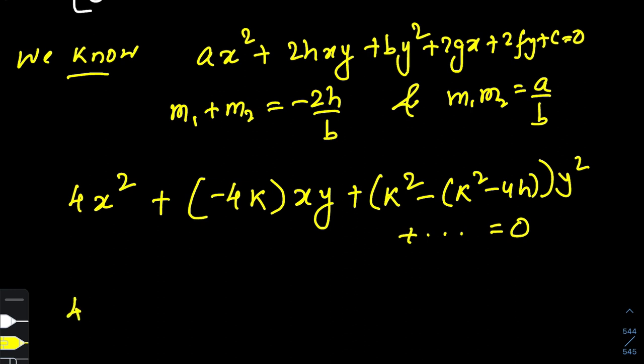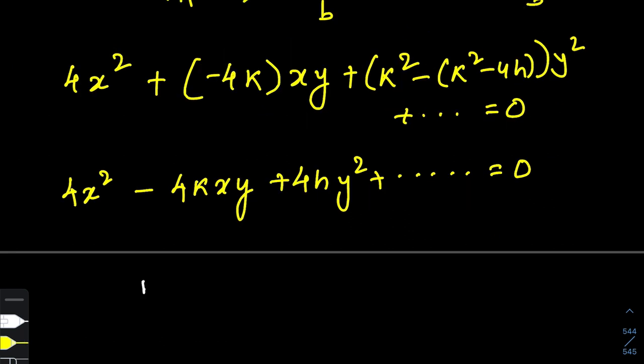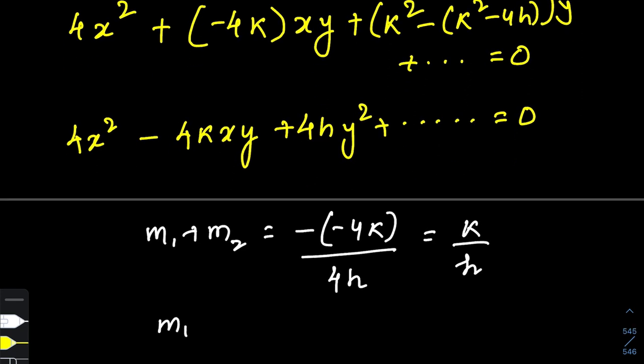So we end up getting the equation of the pair of tangents as 4x² - 4kxy + 4hy² plus some insignificant terms. From here, m₁ + m₂ would be -2h/b which is 4k/4h = k/h, and m₁m₂ would be a/b which is 4/4h = 1/h.